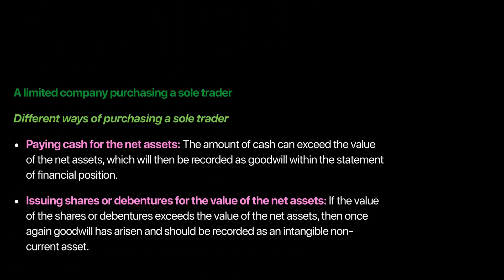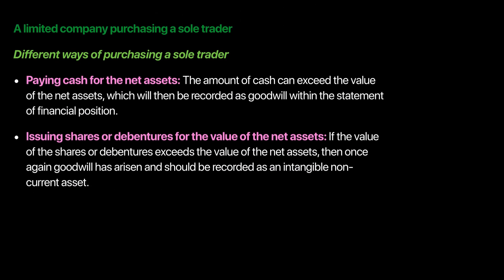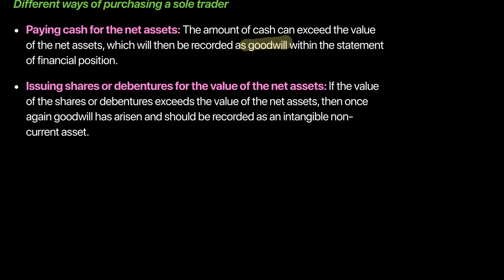In this chapter, we'll look at different cases. A limited company could be buying a sole trader — you can pay off a sole trader by cash, shares, or debentures. If you're paying more than the value of its net assets, that will be recorded as goodwill in the books of the new consolidated company.